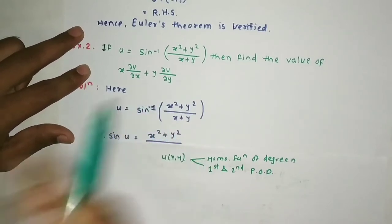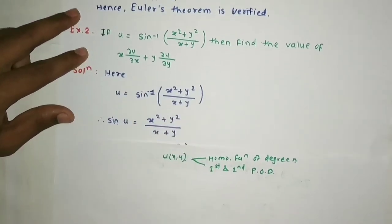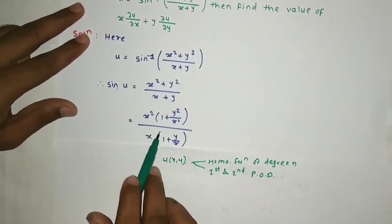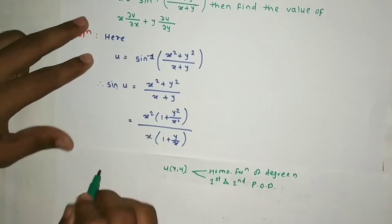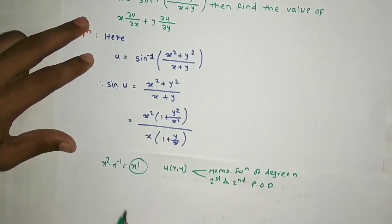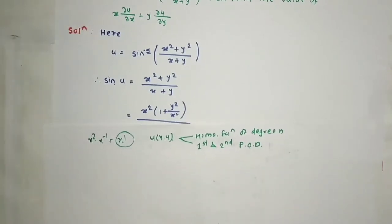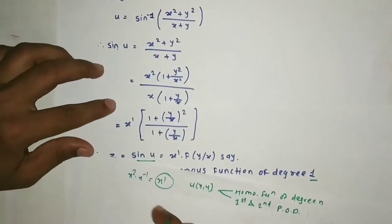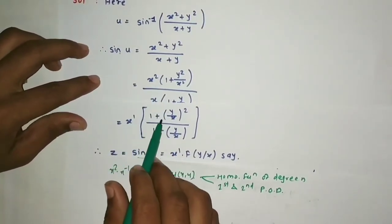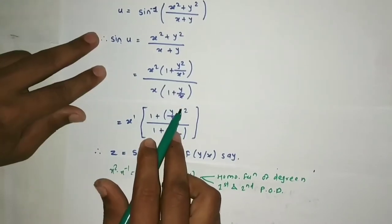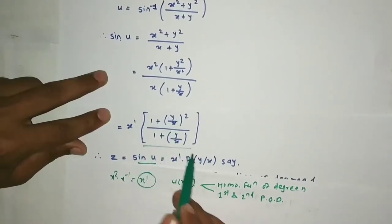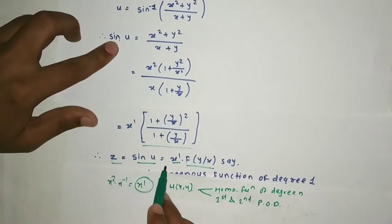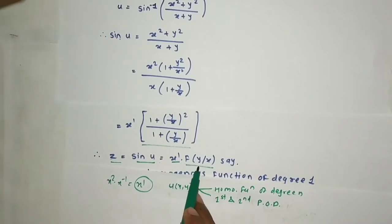We need to find the Euler's theorem LHS. First calculate n. Take x² as common in the numerator. We get x² · (1 + (y/x)²) divided by x · (1 + y/x), which gives x · f(y/x). So f(x,y) = x¹ · f(y/x). Hence z = sin u = x¹ · f(y/x).